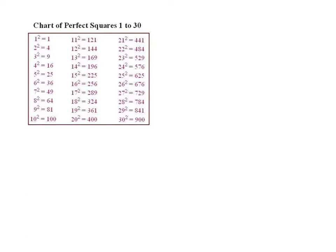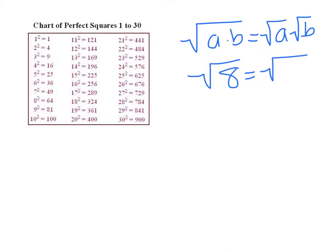There are two other important things to remember. The first is that the square root of A times B can be split into the square root of A times the square root of B. So for example, the square root of 8 is the same thing as the square root of 4 times the square root of 2.